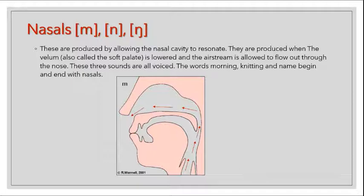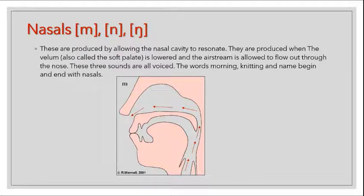Nasals — M, N, and NG. These are produced by allowing the nasal cavity to resonate. They are produced when the velum, also called the soft palate, is lowered and the airstream is allowed to flow out through the nose. As a quick recapitulation: the velum is the soft palate. The velum is lowered and the airstream flows out through the nose.